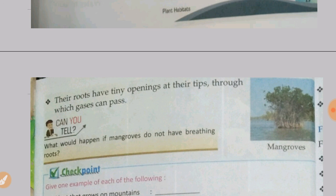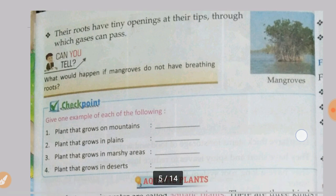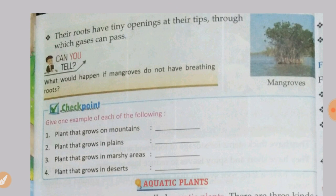These roots have tiny openings at their tips through which gases can pass, allowing the plant to breathe. There is a question: what would happen if mangroves did not have breathing roots? Write its answer in your rough notebook, and the next day I will give you the answer. Thank you.